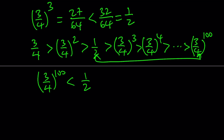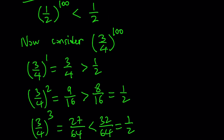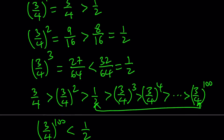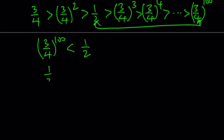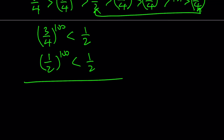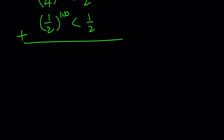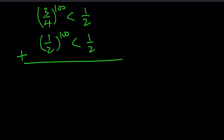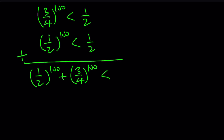Now we have one inequality — 3 fourths to the power of 100 is less than 1 half — and we already had another inequality: 1 half to the power of 100 is also less than 1 half. I want to add these two inequalities together. When we add them, we're going to get something nice. Let's go ahead and put these together, and the result is going to be less than 1.